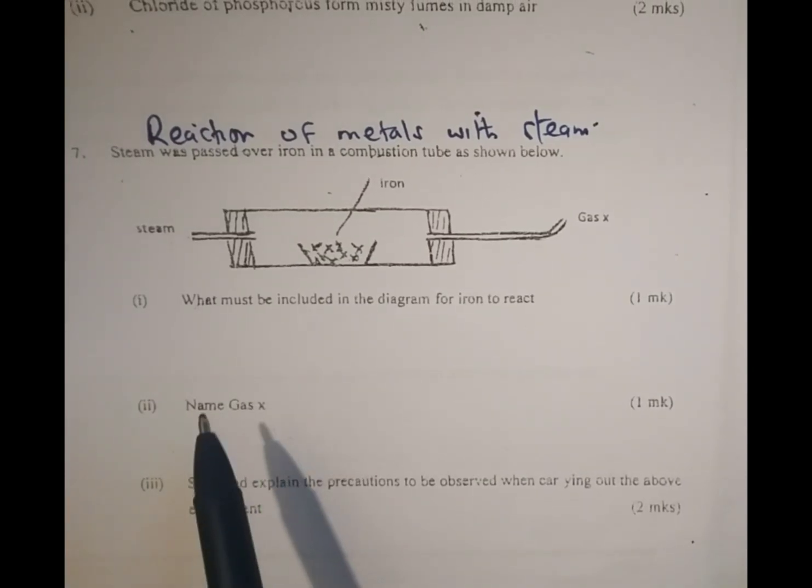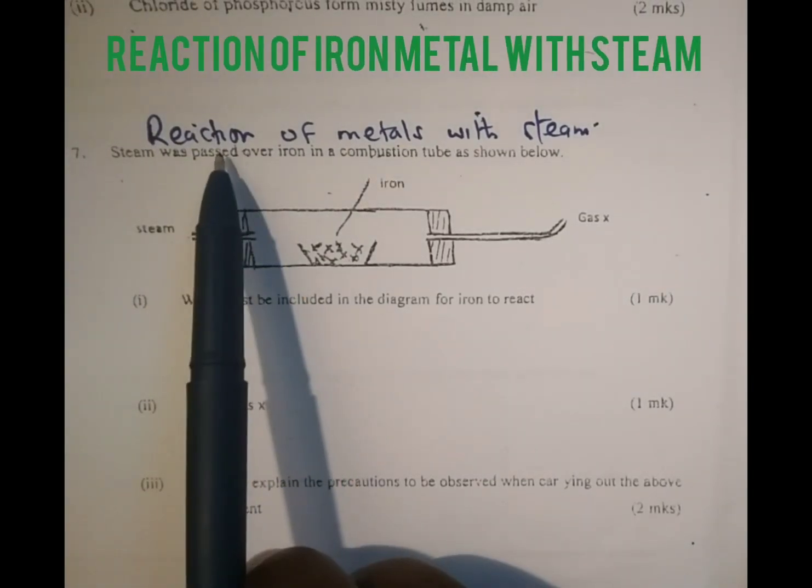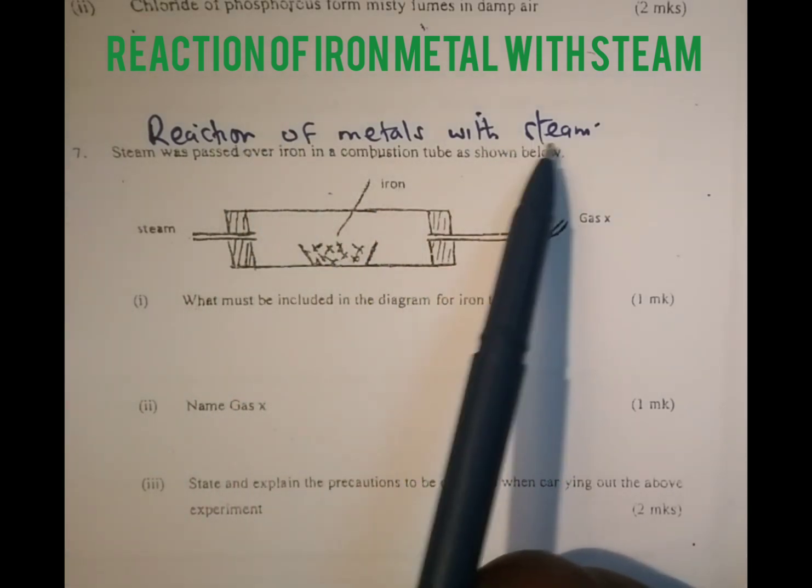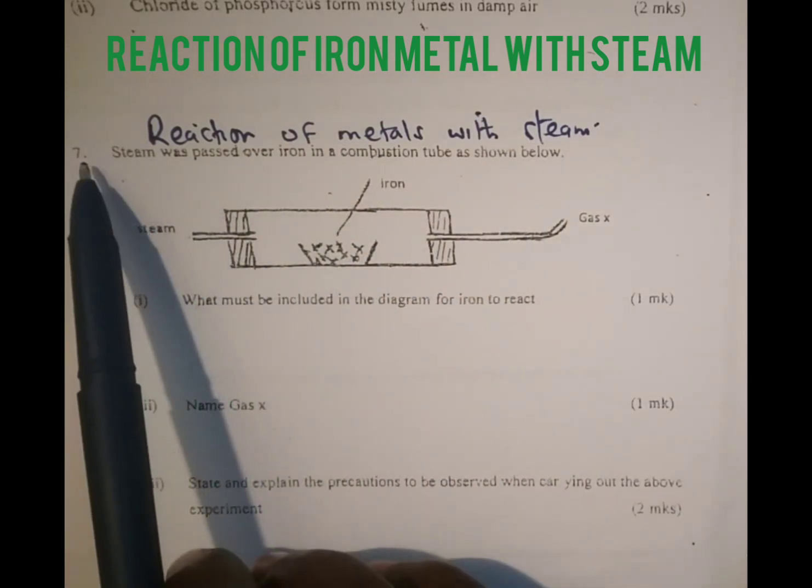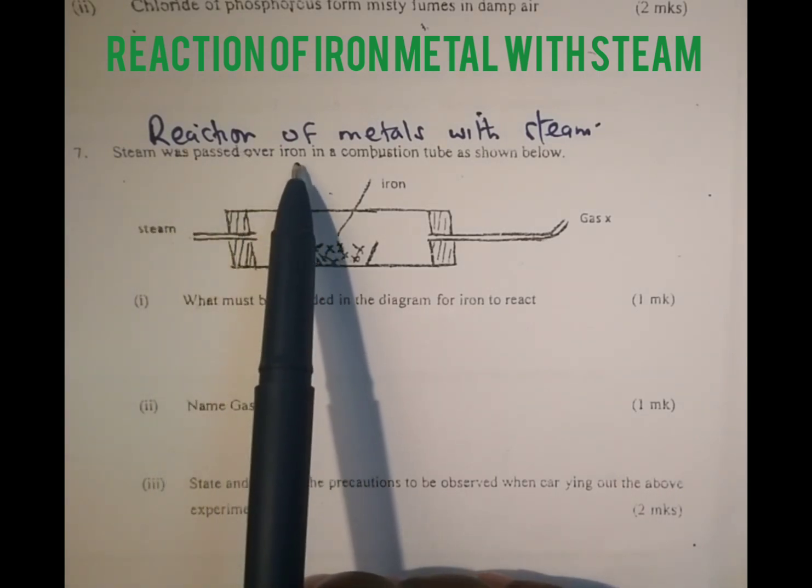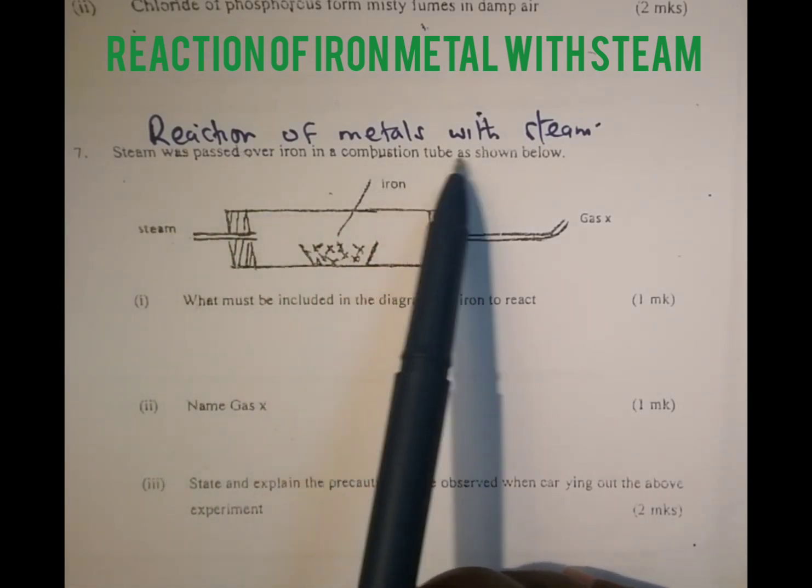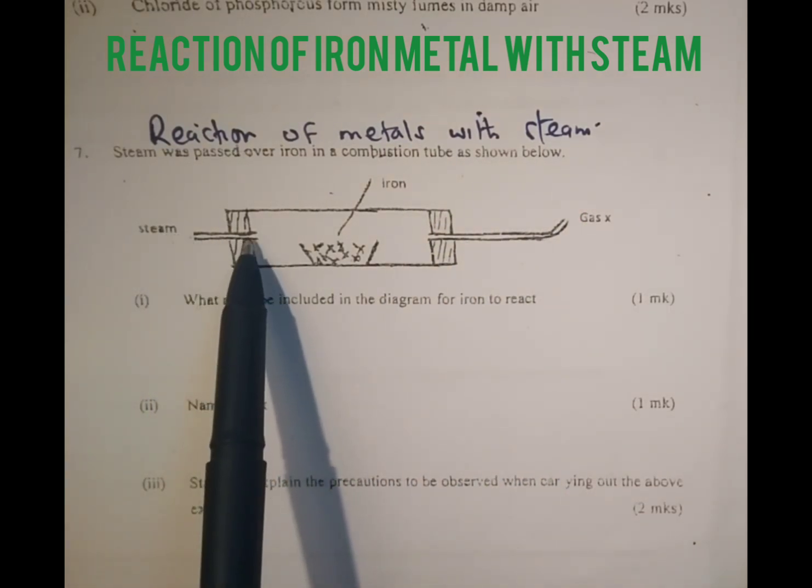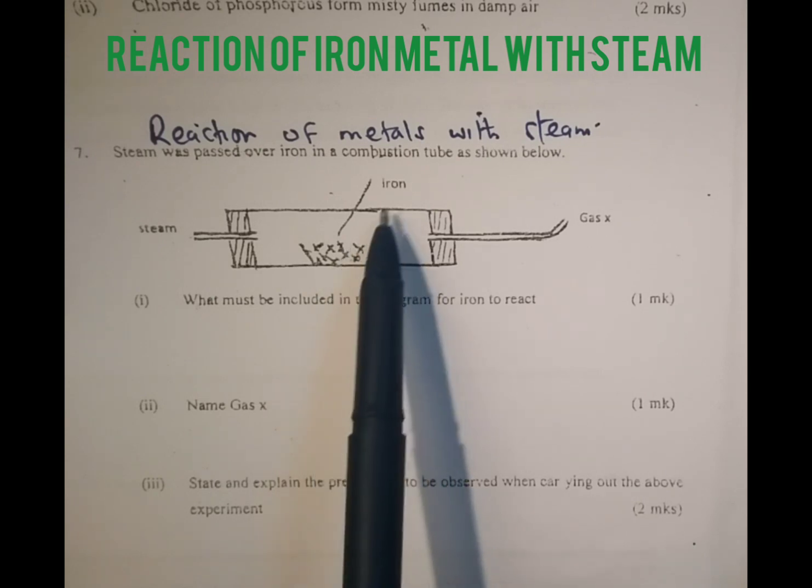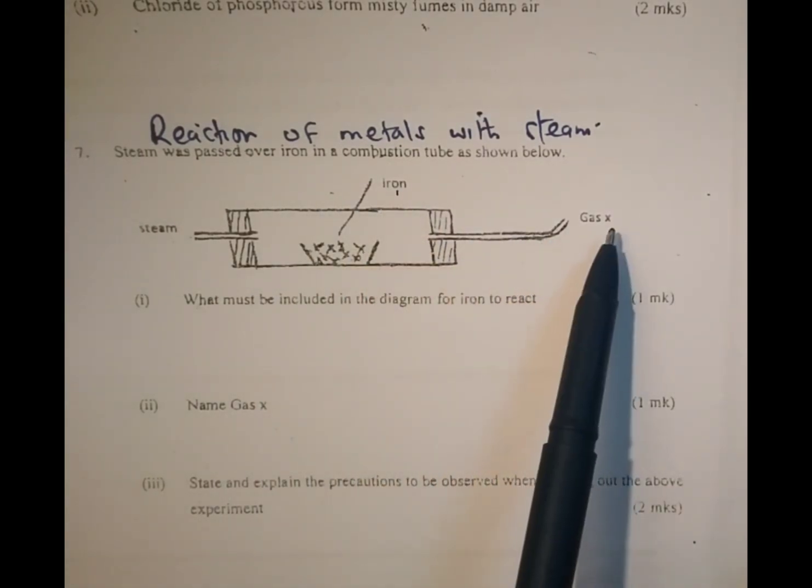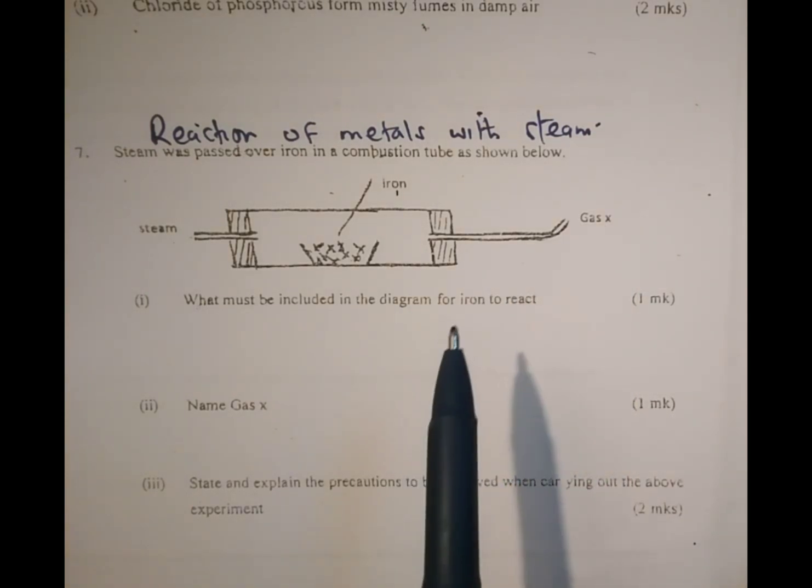Welcome to the discussion. We are looking at a question in form 1, reaction of metals with steam. And the question we have, steam was passed over iron in a combustion tube as shown below. We have steam moving into the combustion tube to come and react with the iron and as a result of the reaction a gas X is produced.